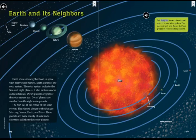This diagram shows planets and objects in our solar system. The asteroid belt and Kuiper belt are groups of rocky and icy objects. Pluto, Kuiper belt, Neptune, Uranus, Saturn, Jupiter, Sun, Mercury, Venus, Earth, Mars, asteroid belt.